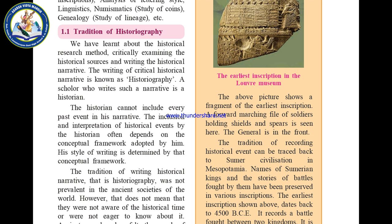We have learnt about historiographical research methods — critically examining historical sources and writing the historical narrative. The writing of critical historical narratives is known as historiography. Writing history critically is historiography. A scholar who writes such a narrative is known as a historian.